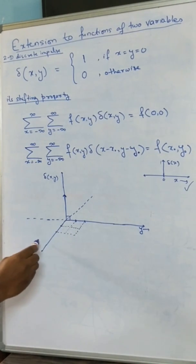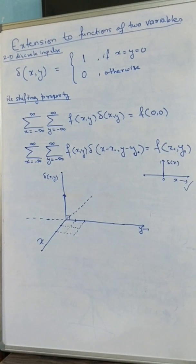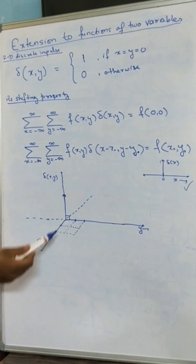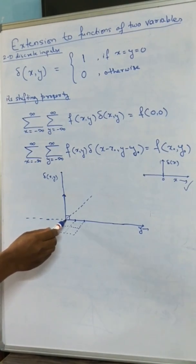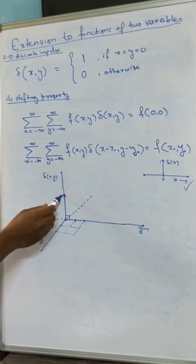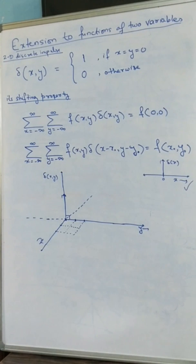This is the x-y plane — this is the y-axis and this is the x-axis. You can think of x as one spatial coordinate and y as the other spatial coordinate, and in our context both axes are discrete in nature. For a 2D discrete impulse, δ(x, y) equals 1 when x equals 0 and y equals 0. At that point you have an arrow of magnitude 1 — this is how a 2D impulse looks.